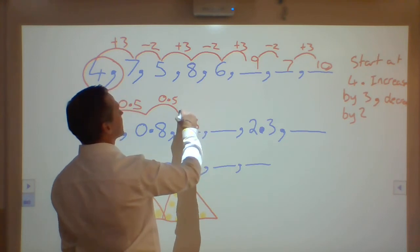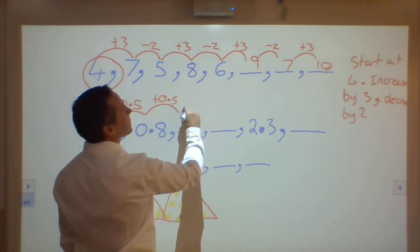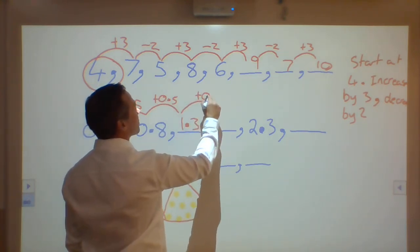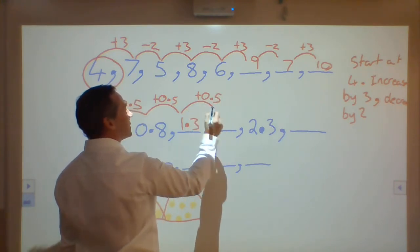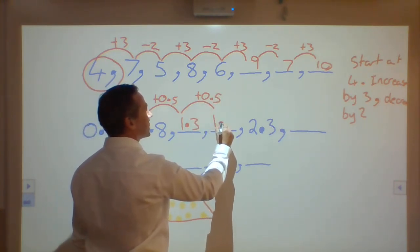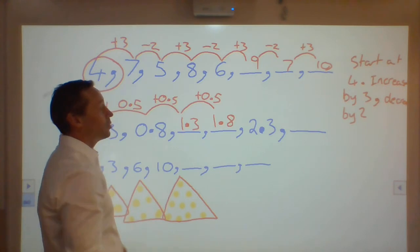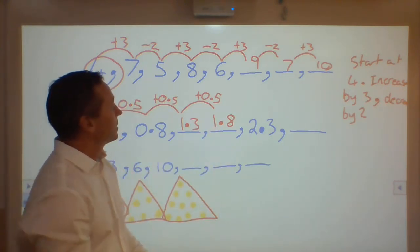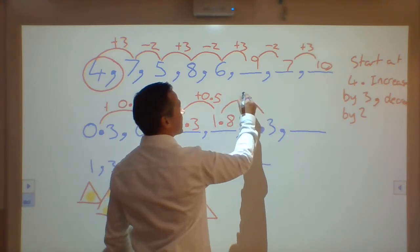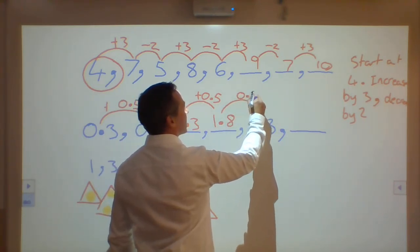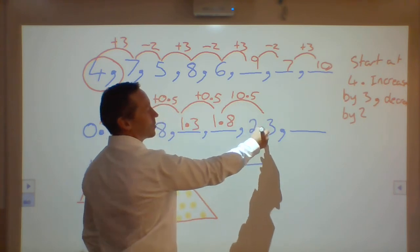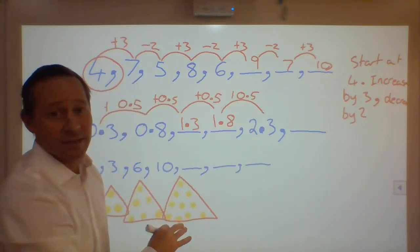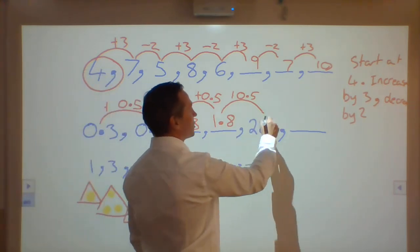If I continue this pattern, I'm plusing 0.5, or 5 tenths, with 1.8. Or, I could say, 1 and 8 tenths. And I increase that, just to check it. Increasing that, and that equals that, so I know my pattern sequence is correct.